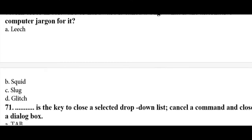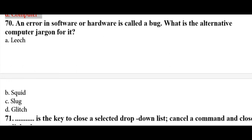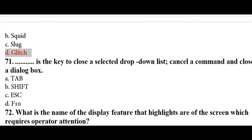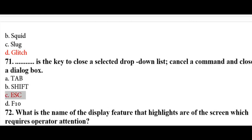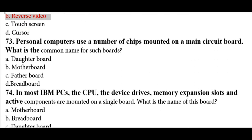An error in software or hardware is called a bug. The alternative computer jargon for a bug is a glitch — when your cursor or mouse gets stuck, you get a glitch. The Escape key is used to close a selected drop-down list, cancel a command, and close a dialog box. The display feature that highlights areas off-screen requiring operator attention is called reverse video.